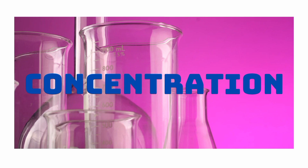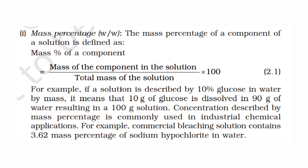Mass percentage is defined as the mass of the component divided by the total mass of the solution, multiplied by 100. For example, 10% glucose solution means 10 grams of glucose dissolved in 90 grams of water, giving 100 grams of solution total. That is the mass percentage.